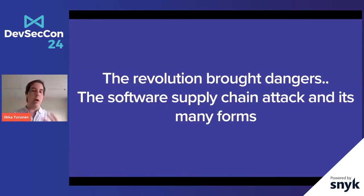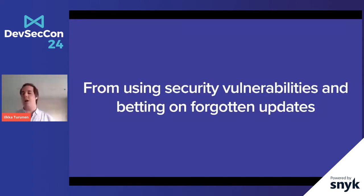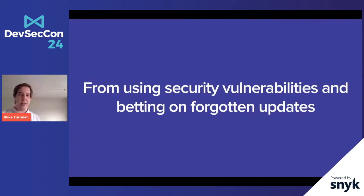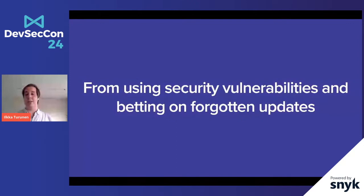Let's start with the basic software supply chain attack — that is, using known security vulnerabilities in open source components and betting that you as a developer forget to update those dependencies. It makes a ton of sense: if 80 to 90% of your code is open source, in a typical Java project you have about 100 to 110 different open source projects on average. When using libraries for boilerplate, we're talking 300 to 400 modules very easily per project.